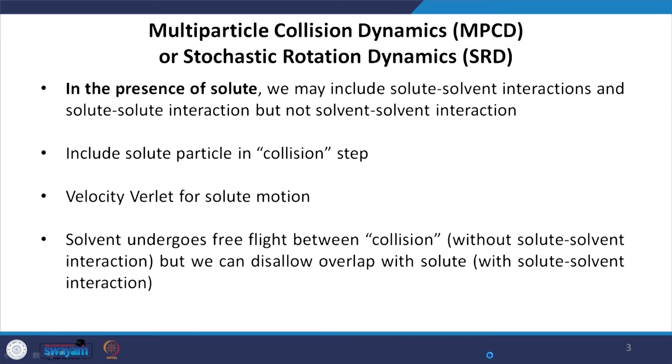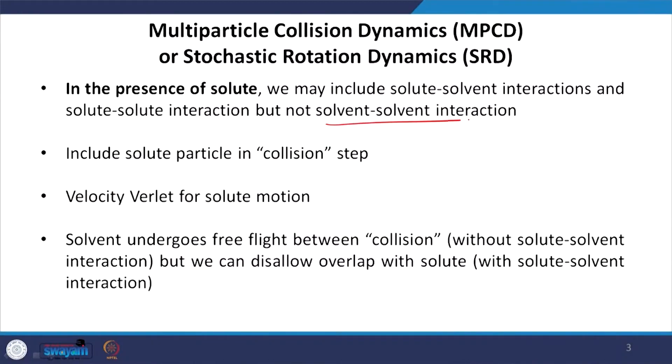In the presence of a solute, we may include solute-solvent interactions if we want, but the solvent is still modeled as an ideal gas — so there are no solvent-solvent interactions. We can have solute-solvent and solute-solute interactions, but still no solvent-solvent interactions. This makes the computation somewhat slower compared to the no-solute case, but since solvent-solvent interactions are not accounted for, we still have quite an efficient scheme.